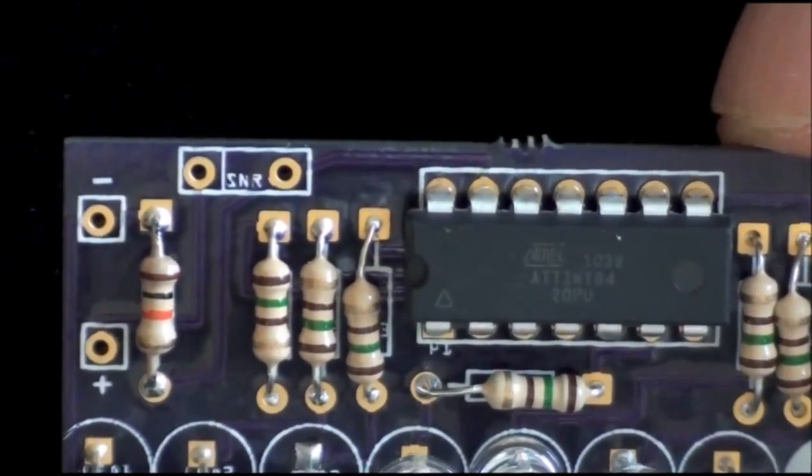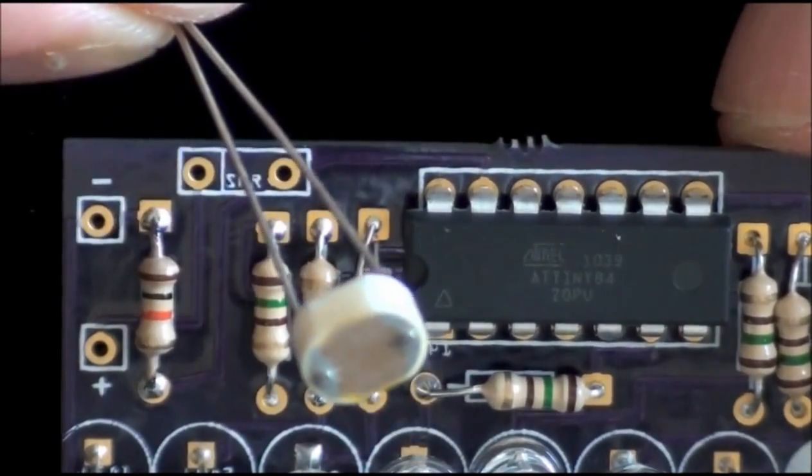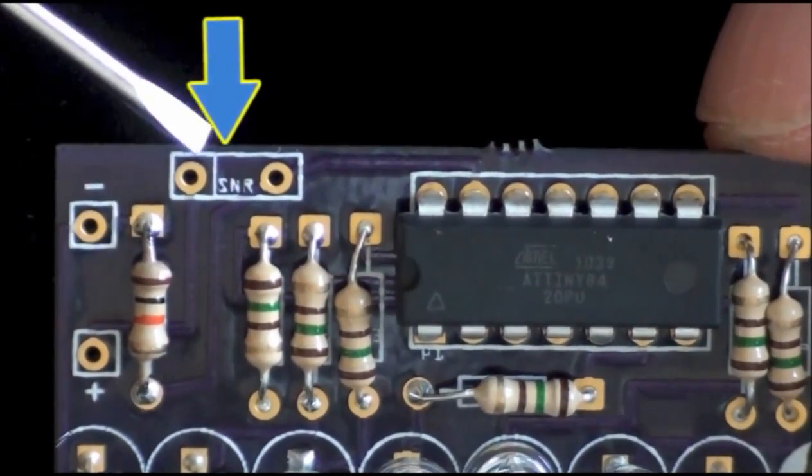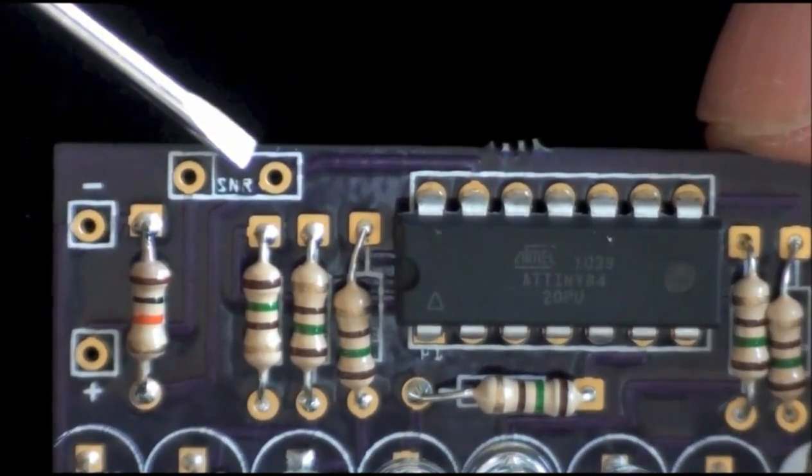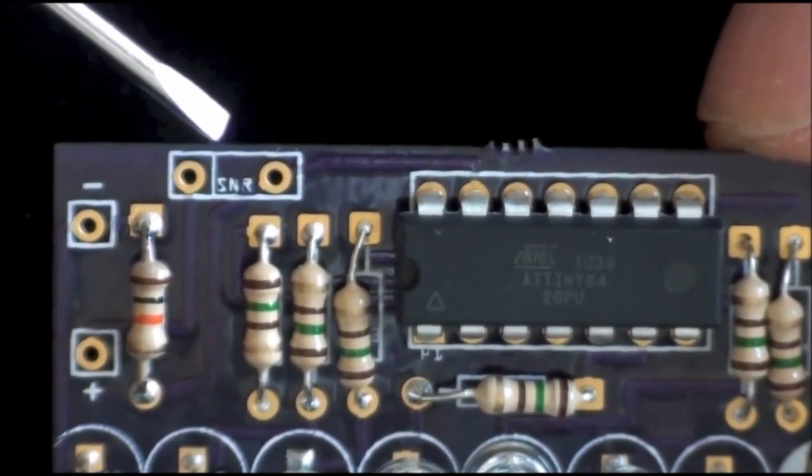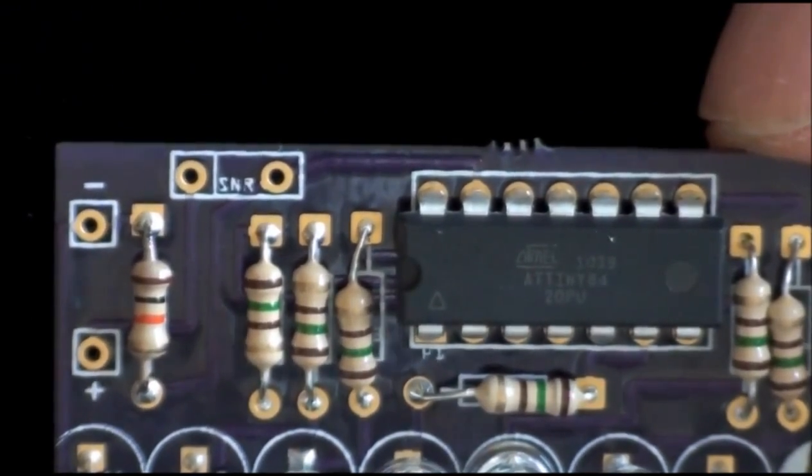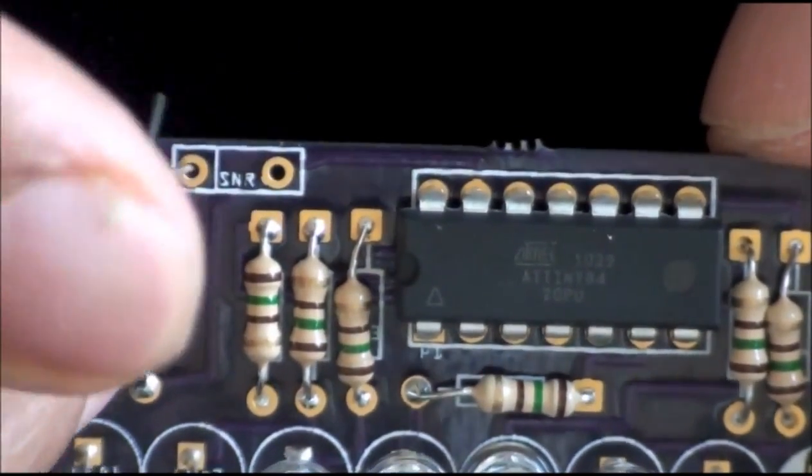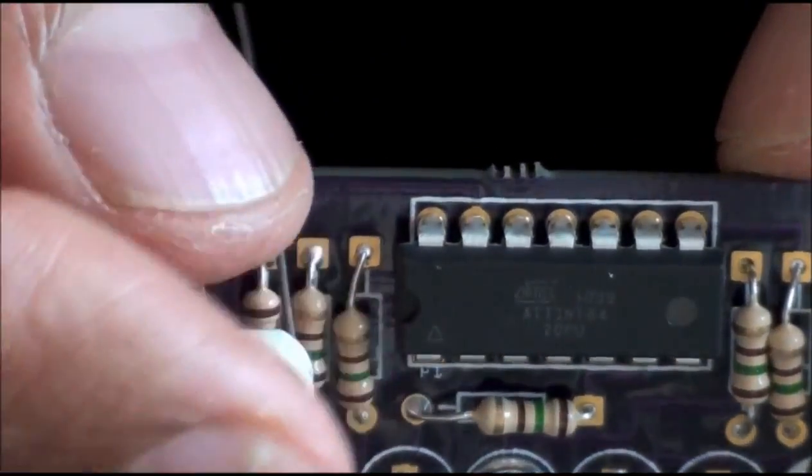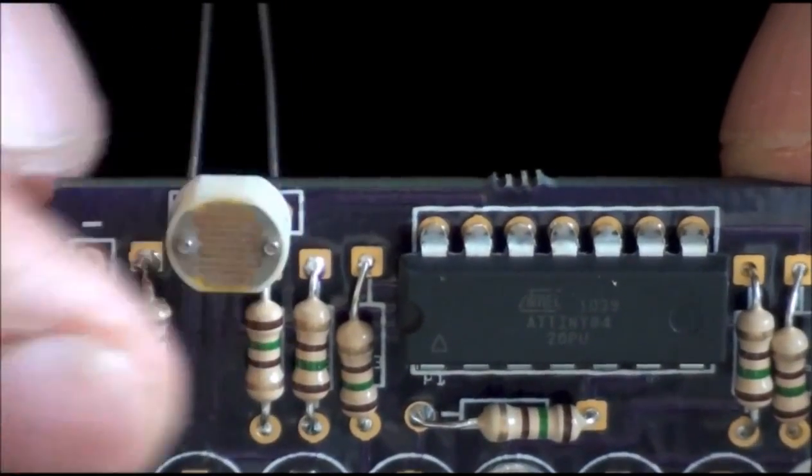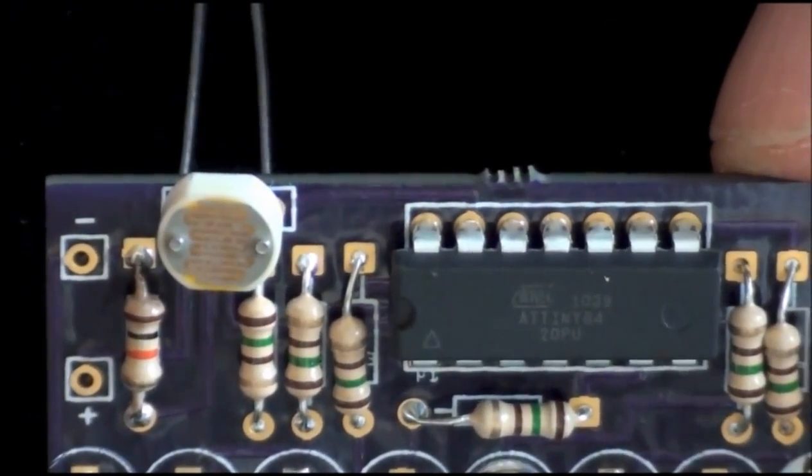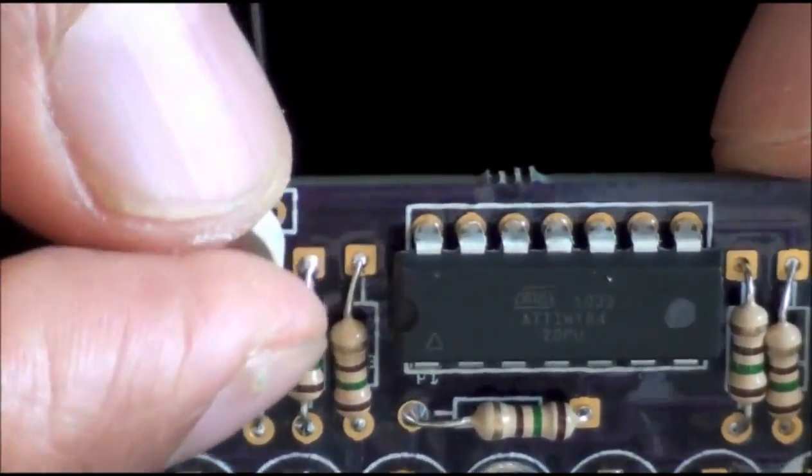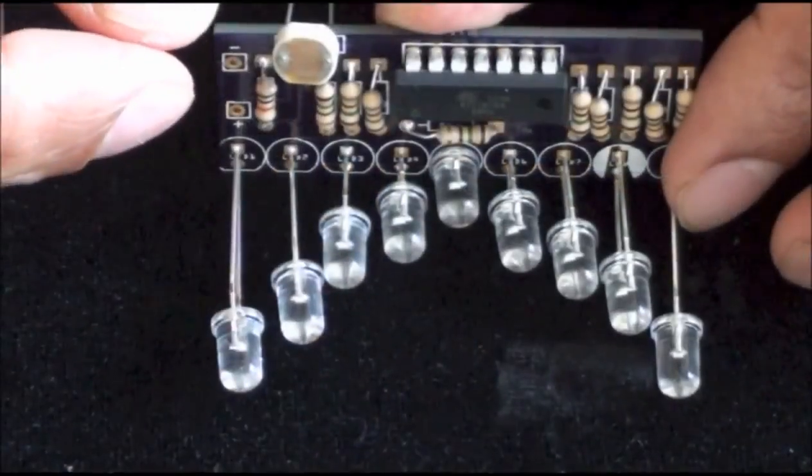Now let's move on to the sensor. The sensor will go into the area that is marked SNR. The sensor, like the resistors, does not have polarity. So feel free to place whichever leg you wish into either of the pin holes. You can place the sensor close to the board or you can have it further up. Once you have chosen the position of your sensor, you can go ahead and solder it into place.